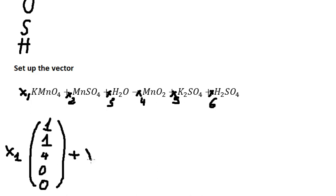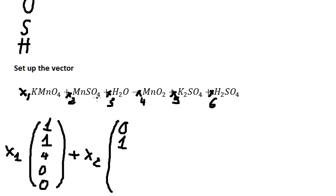Now we go to S2. In this one we don't have K, so we have zero. We have one Mn, four oxygen, one H, and we don't have hydrogen, so zero.